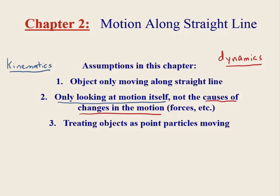In this chapter, we'll be treating objects as point particles that are moving back and forth. This way, we don't have to worry about, for example, the swing of a person's arms and legs as they walk. We're just going to look at them as a point that moves back and forth, to try and make the motion as simple as possible at first.